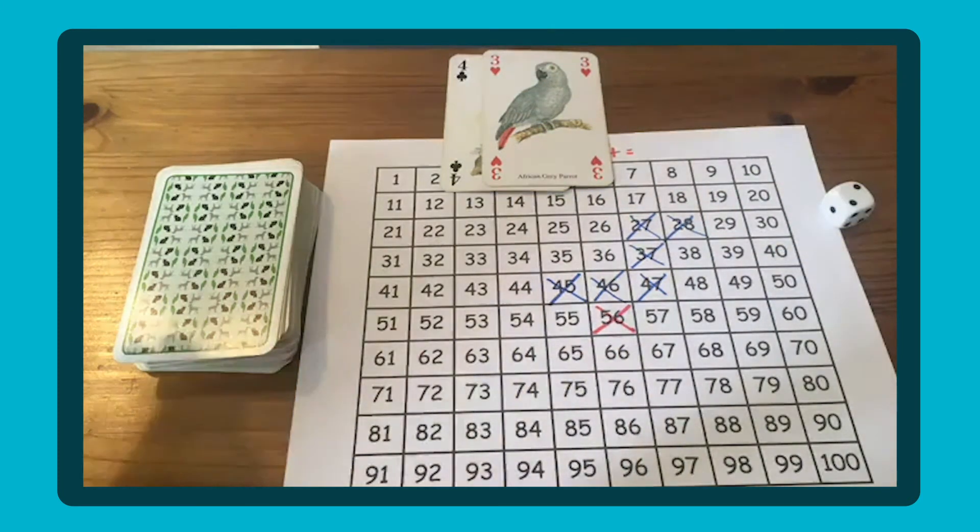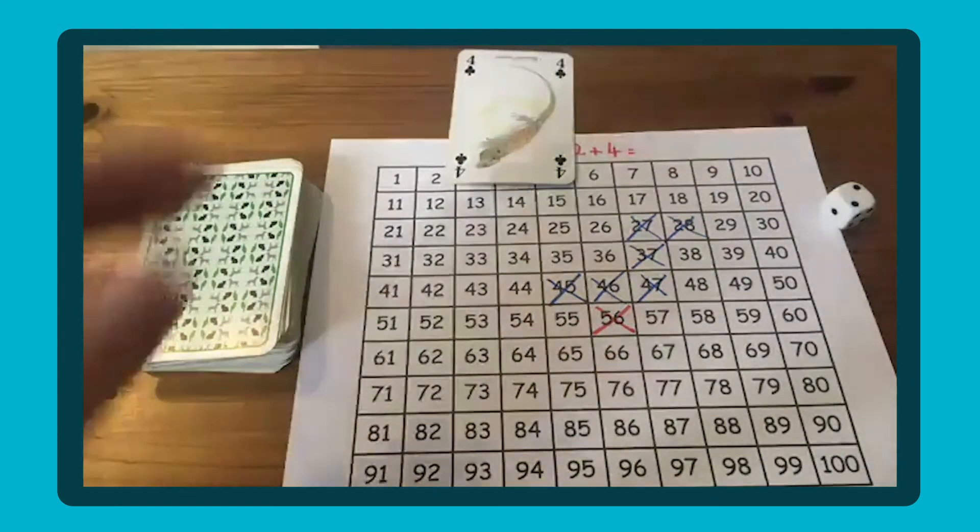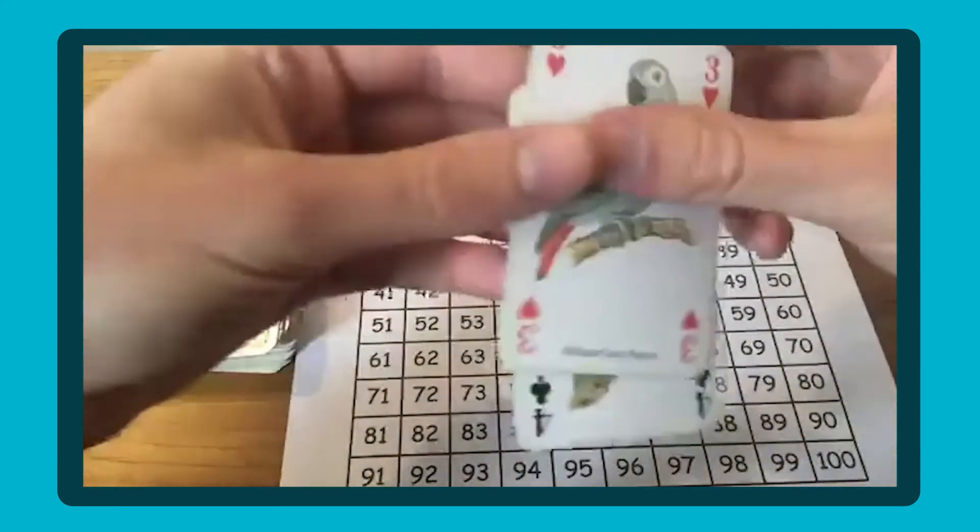You can reduce the size of that grid to maybe 20 or even 10. If you're generating single digits, those are just some ideas you could use to help your child with counting on to master and practice early addition skills.